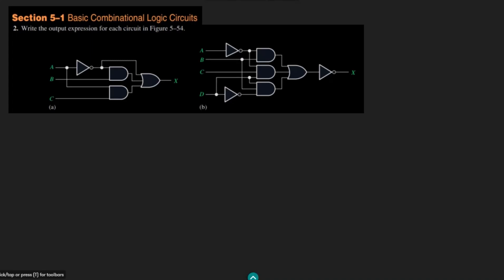Welcome, this is Chapter 5, Section 5.1. This is question number 2 and we have to write the output expression for each of the circuits given in figure 5.54. We have two parts, Part A and Part B. In Part A we have three inputs A, B, C given to different gates, and we have to find the output X.